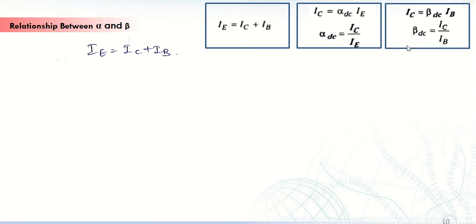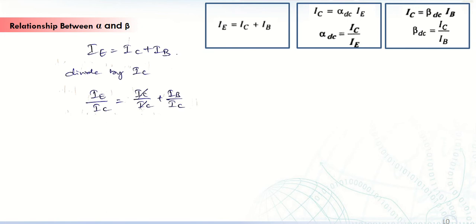By using these expressions we can derive the relationship between alpha and beta. First, let us take the expression IE is equal to IC plus IB, and divide this expression by IC. So it becomes IE divided by IC is equal to IC divided by IC plus IB divided by IC.